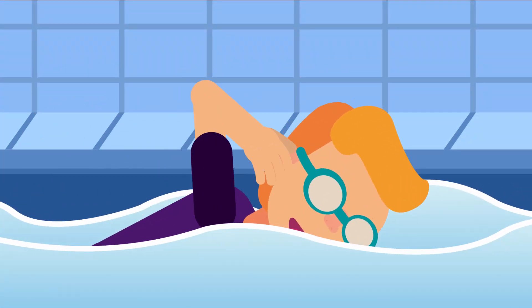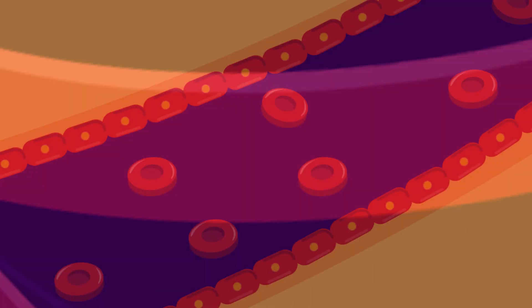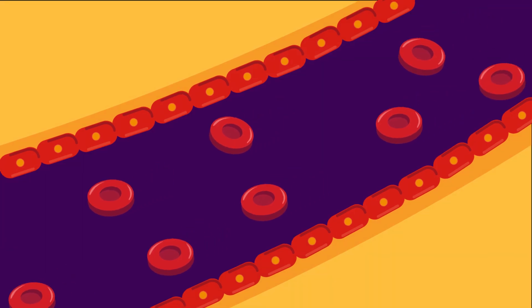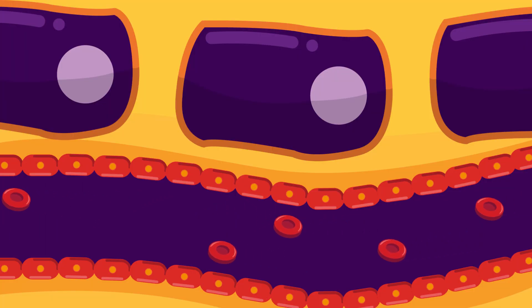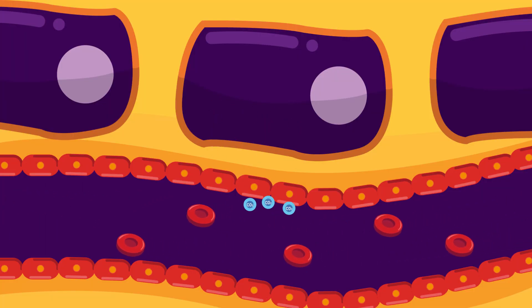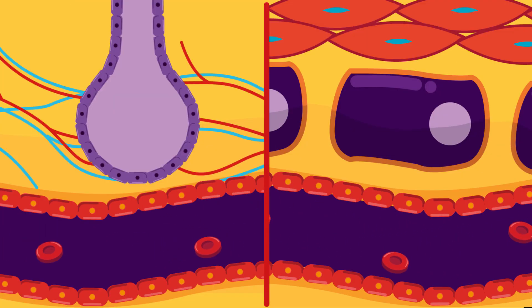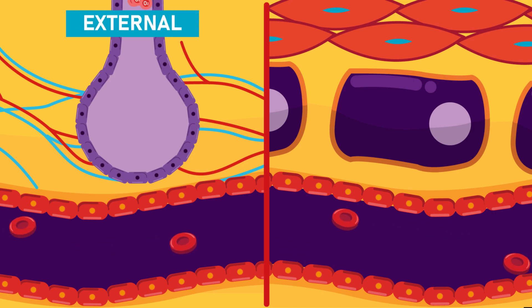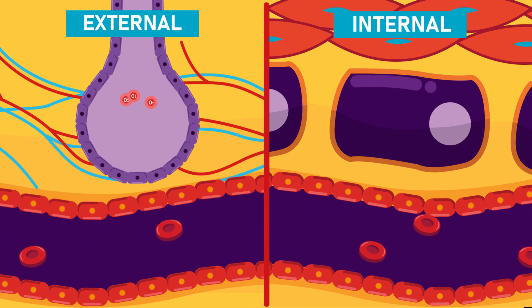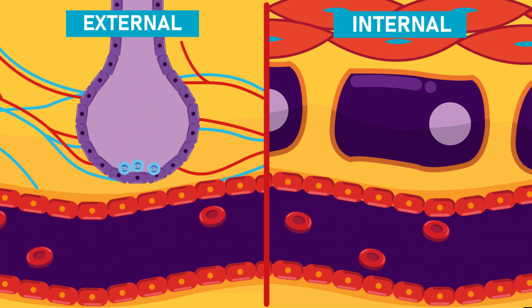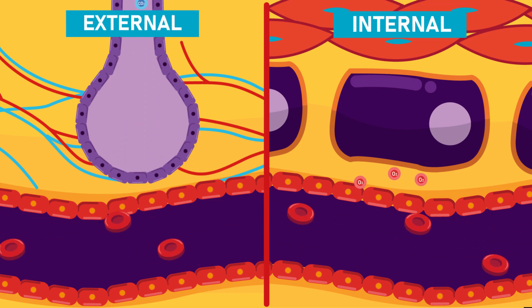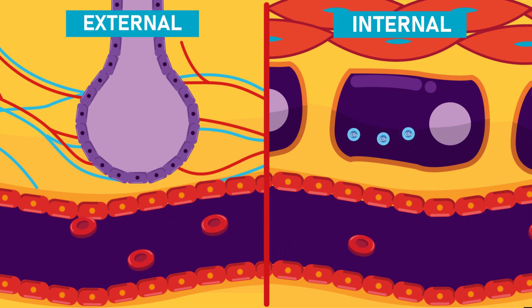Internal respiration is the exchange of gases between blood and body tissues. It occurs in metabolizing tissues. Like external respiration, internal respiration also happens as simple diffusion because of a partial pressure gradient.